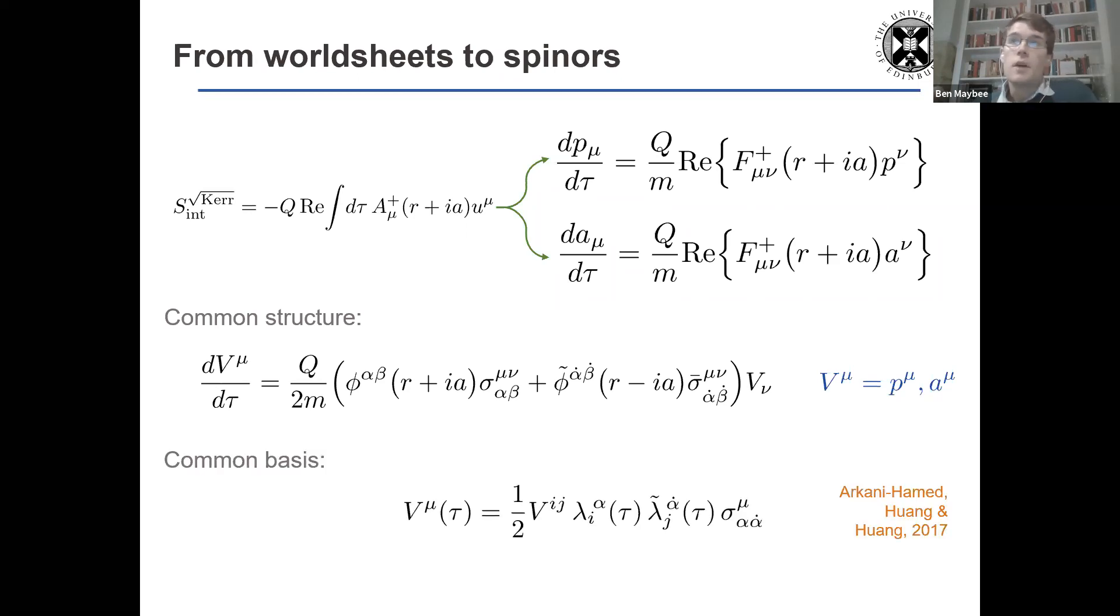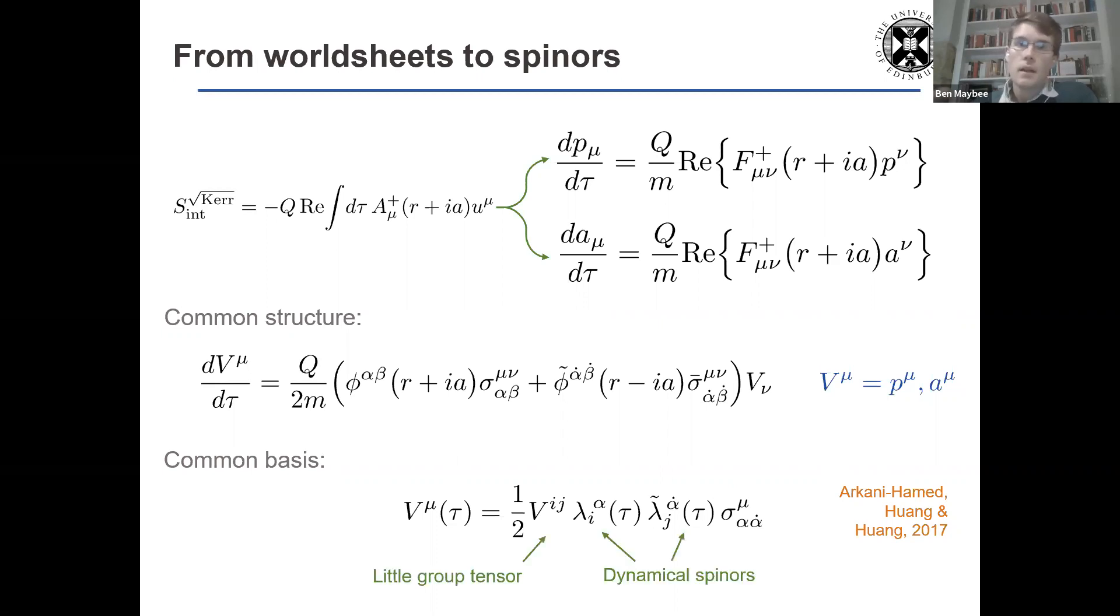And we could also introduce a common basis for the worldline quantities, momentum and the spin vector. So using the work by Huang, Huang, and Huang, we could introduce massive spinors. But we've got a little group tensor encoding which of the worldline dynamical quantities we're looking at. And then we have two chiral and antichiral spinors with SU2 little group indices.